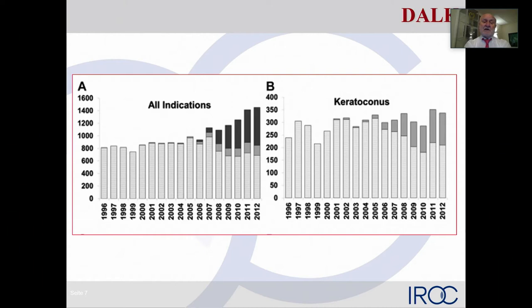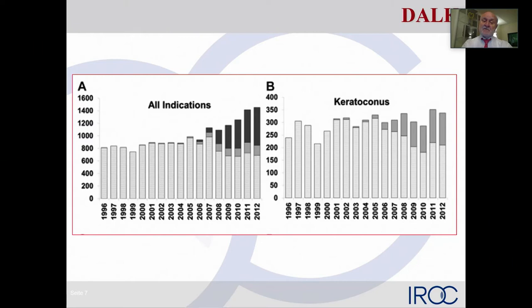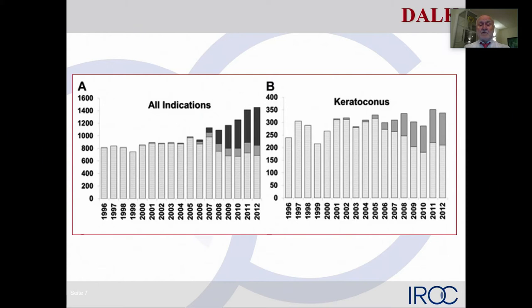Conversion rates to penetrating keratoplasty are reported in international literature ranging from 10 to 50 percent. If the big bubble doesn't work reliably, manual Descemet's dissection can take up to two hours. This is the true reason why DALK has gained only a limited number of surgeons. Australian keratoconus registry statistics show DALK started around 2000–2001, rose to 25–30%, and has stayed constant for nearly 10 years, because it's too time-consuming in private practice. In Switzerland, you actually receive less reimbursement for DALK than for penetrating keratoplasty, despite DALK sometimes taking two hours.